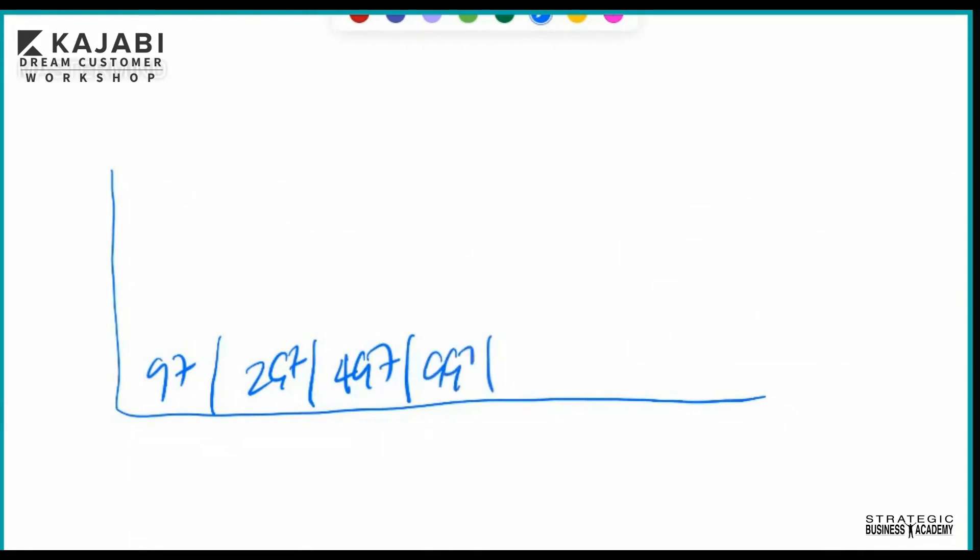Then you have $997, $1997, and let's say high ticket – I don't like using that word – $4997. And on this area here, this is profit, and this is time.